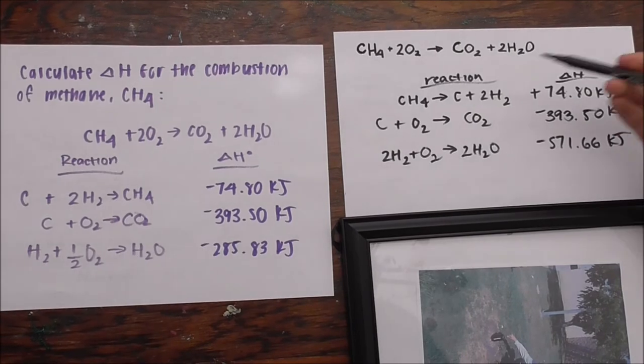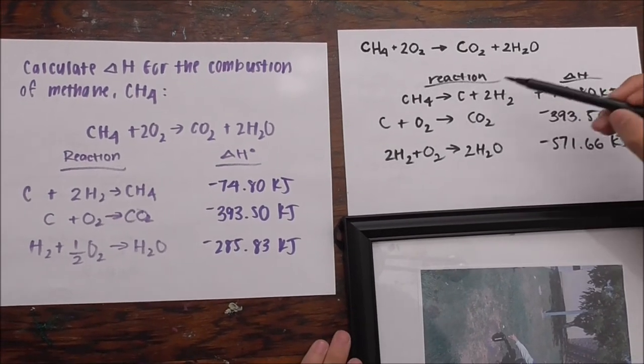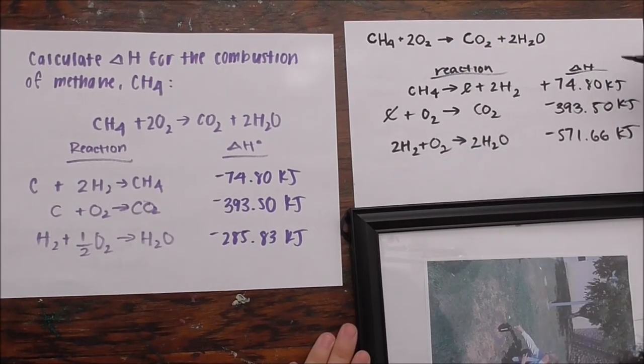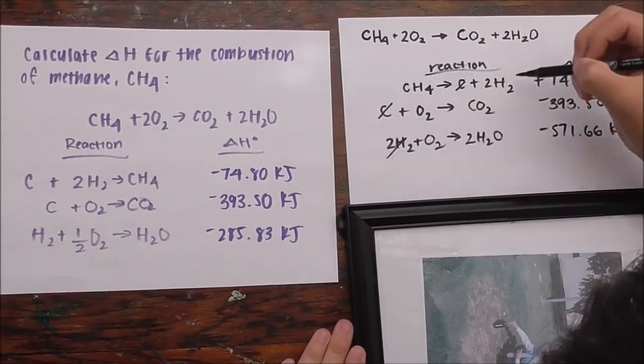Now that we have that done, we can cancel out anything that are on opposite sides of the reaction. So, C, we can cancel out. And then the two H2s we have.